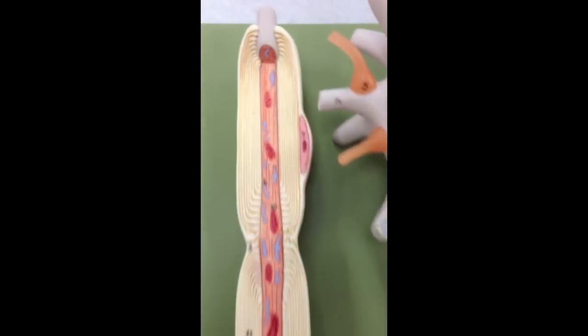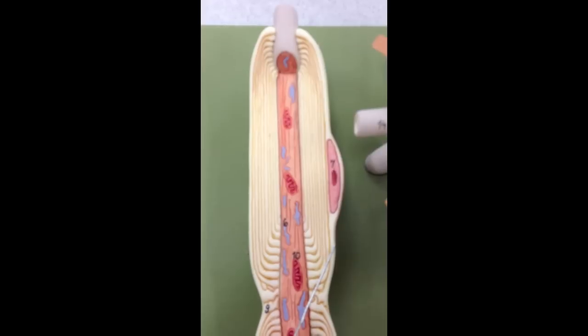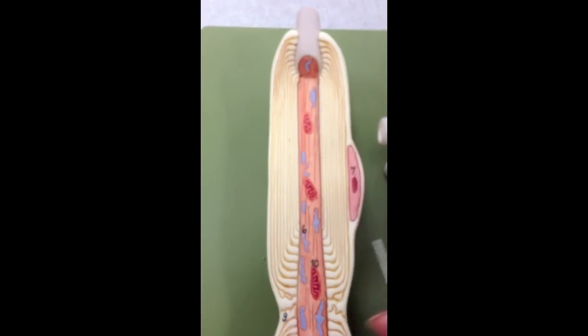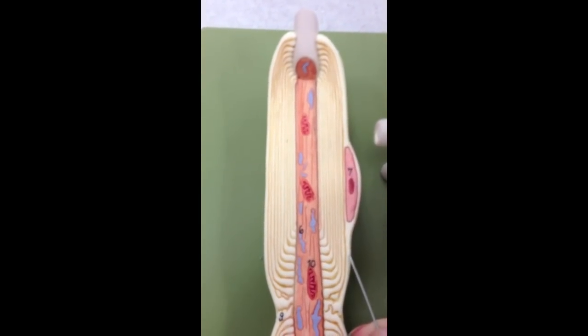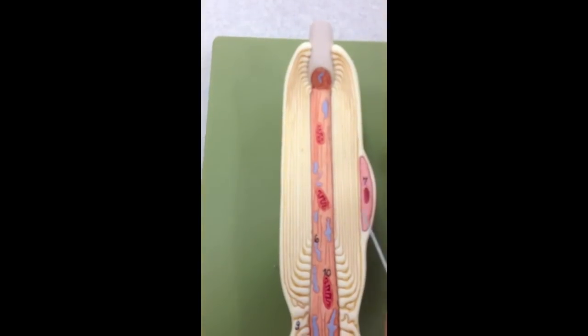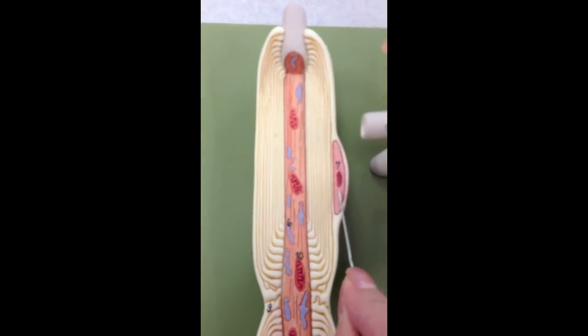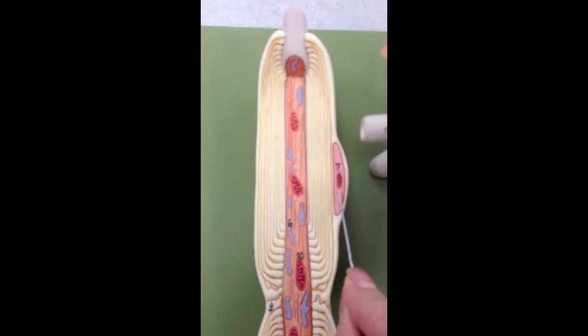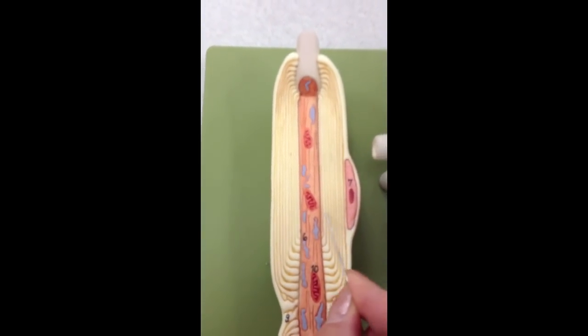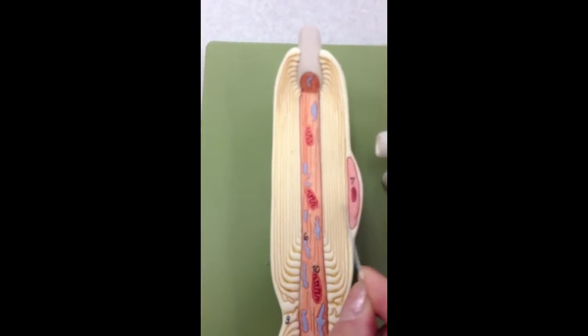Now if we look at this very outer layer right here, this is the neurolemma. Right here, this is the nucleus of the Schwann cell. And then if we look at this whole area right here, that is the myelin sheath.